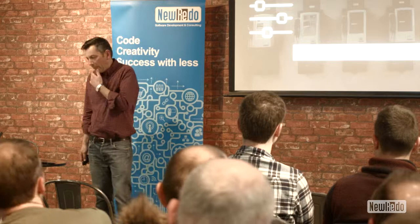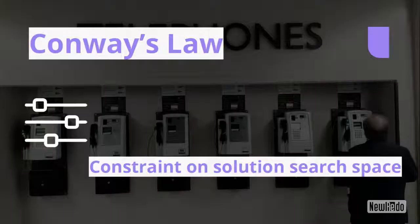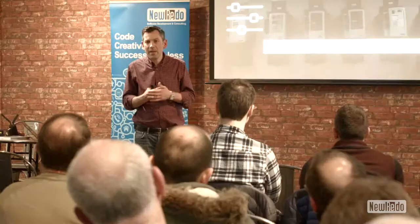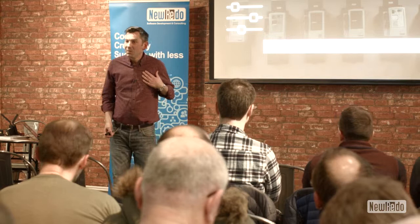The most important thing about Conway's law, in the original 1967 article by Mel Conway, is that it's a constraint on the solution search space. This is a C-level — CEO-level — concern. If our organisation is arranged in a particular way, it might be limiting what we can do fundamentally. We might not have the capability to achieve certain things. If something about how our teams are arranged is limiting our ability to innovate, that's a real problem — especially when you have to report to investors.